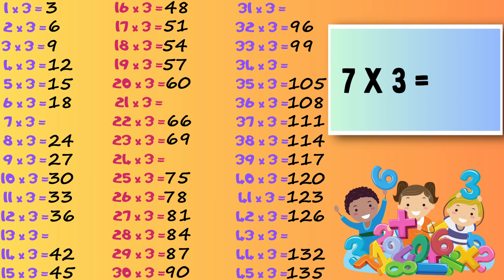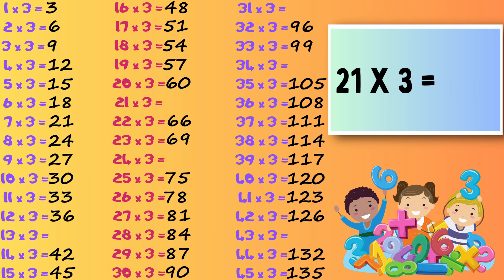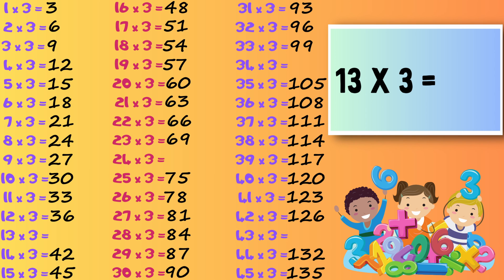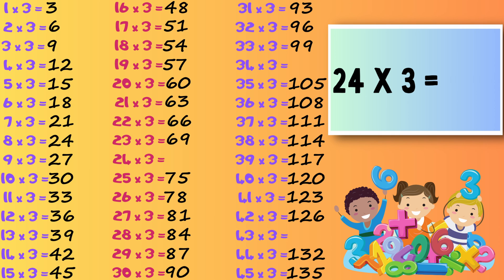Seven times three — twenty-one. Twenty-one times three — sixty-three. Thirty-one times three — ninety-three. Thirteen times three — thirty-nine. Twenty-four times three — seventy-two.